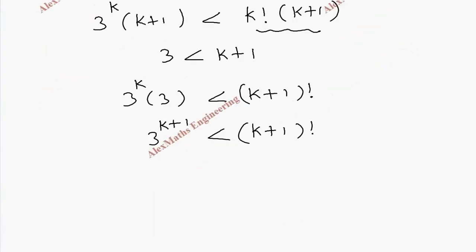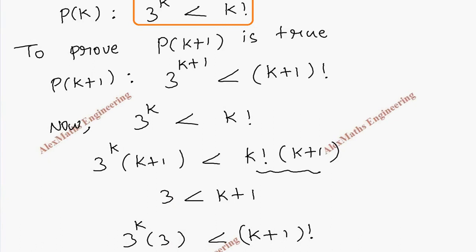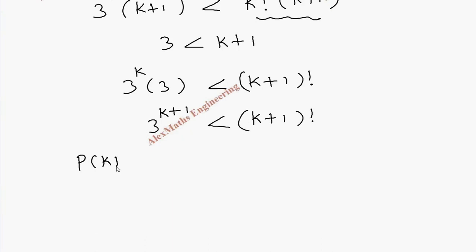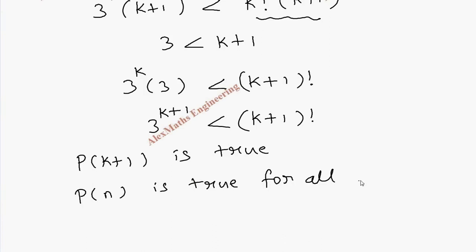Therefore, we have proved P of k plus 1 is true. We already wrote the P of k plus 1 expression: 3 power k plus 1 is less than k plus 1 factorial, and we got it here. Hence we conclude P of k plus 1 is true, and therefore P of n is true for all n greater than 6 and n belonging to natural numbers, by the principle of mathematical induction.